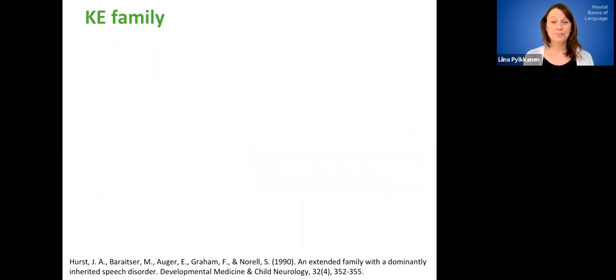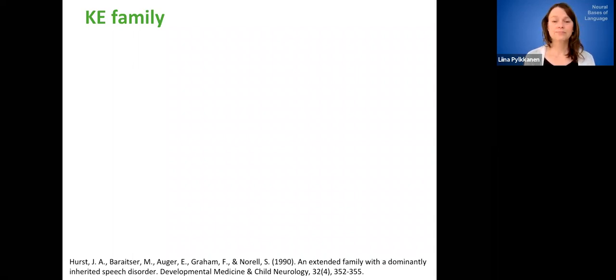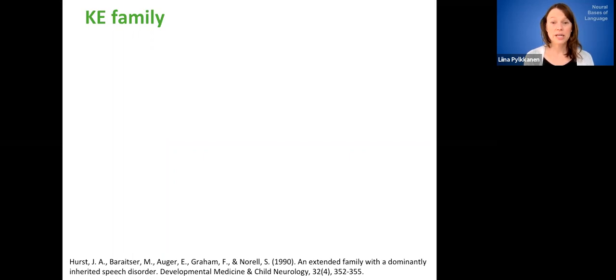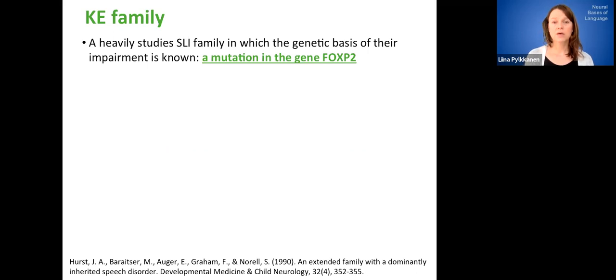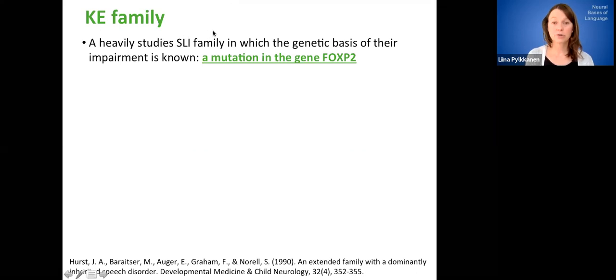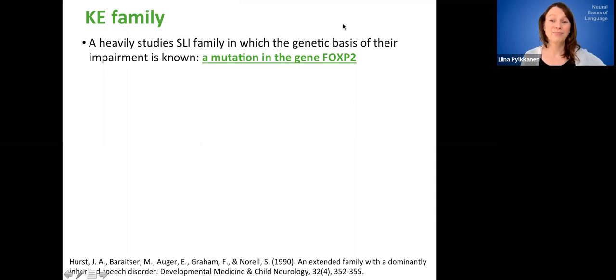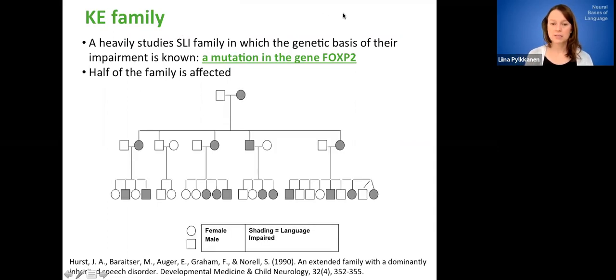However, in contrast to the literature on the general population, where we don't really know the genetic basis, there's actually one family in the UK, in which half of the members have SLI. And in that family, the genetic basis of their SLI is known. So the affected members in that family all have a mutation in a gene that's called FOXP2. Okay. And when this was discovered, it created a lot of media attention because there was the possibility that this actually could be some kind of a language gene. So like I said, half of the family is affected. Here's a family tree of three generations from this family. The shaded members are the language impaired members.